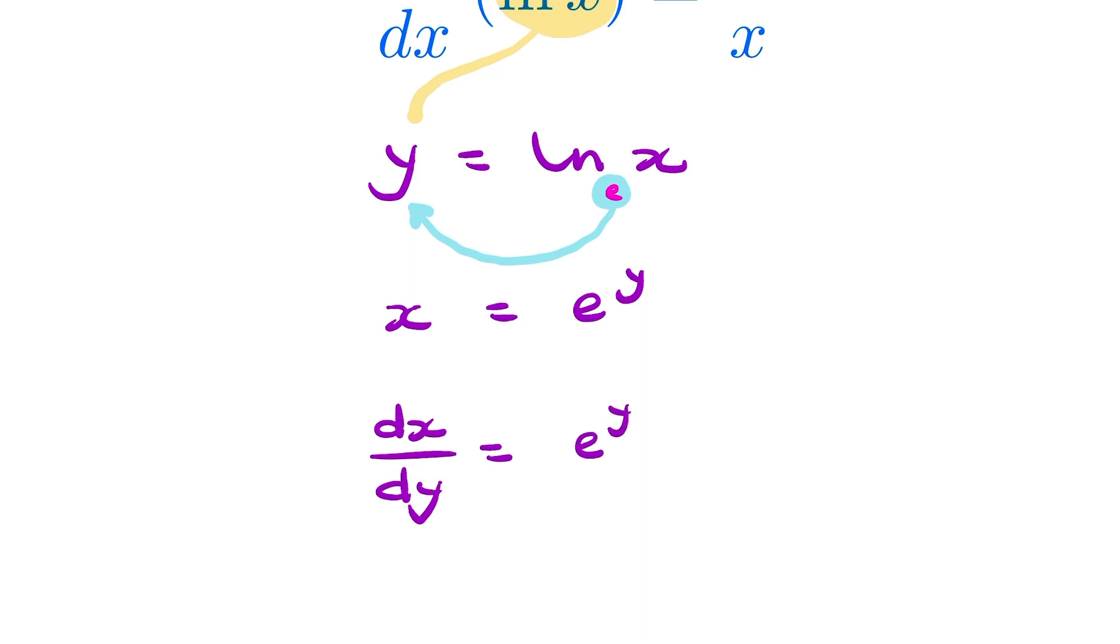But e to the power y, that's just x, isn't it? We literally just said x equals e to the power y. So I can rewrite that as dx by dy equals x.